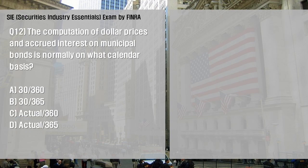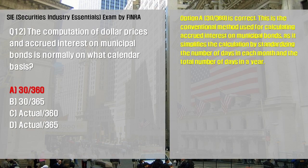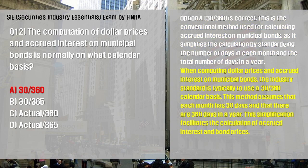The computation of dollar prices and accrued interest on municipal bonds is normally on what calendar basis? A: 30/360; B: 30/365; C: Actual/360; D: Actual/365. Option A is correct. This is the conventional method used for calculating accrued interest on municipal bonds, as it simplifies the calculation by standardizing the number of days in each month and the total number of days in a year. The industry standard assumes each month has 30 days and there are 360 days in a year.